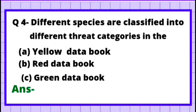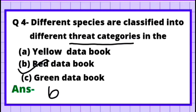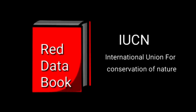Question 4: Different species are classified into different threat categories in the — Option A: Yellow Data Book, Option B: Red Data Book, Option C: Green Data Book. The correct answer is Option B — Red Data Book. This book is published by the IUCN, which stands for International Union for Conservation of Nature. It contains information about animals in categories of danger, including endangered and extinct species.